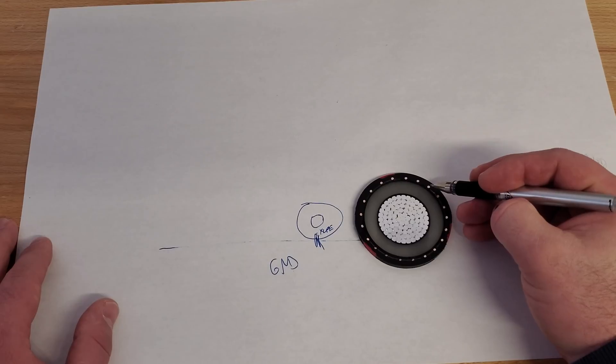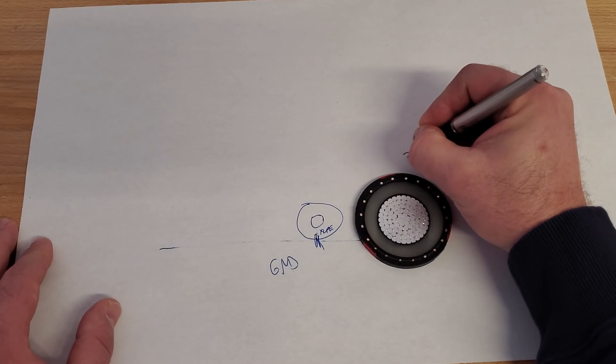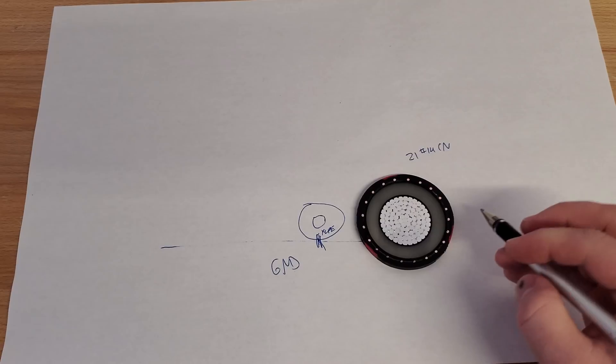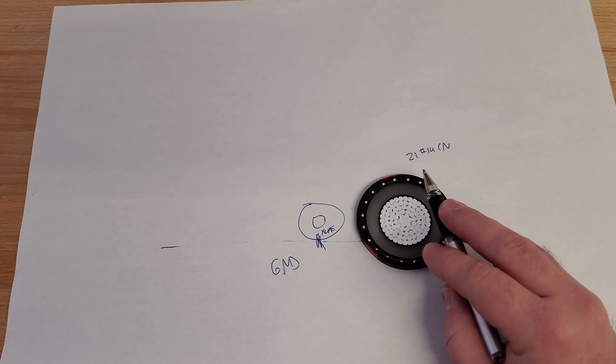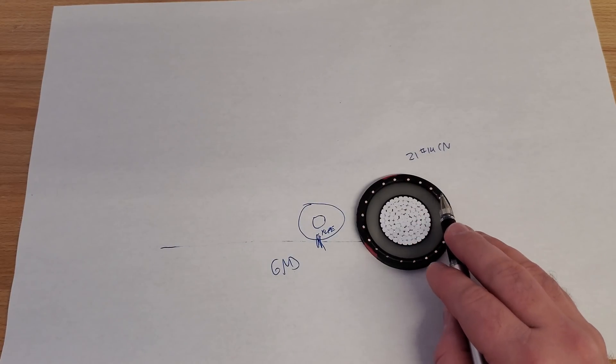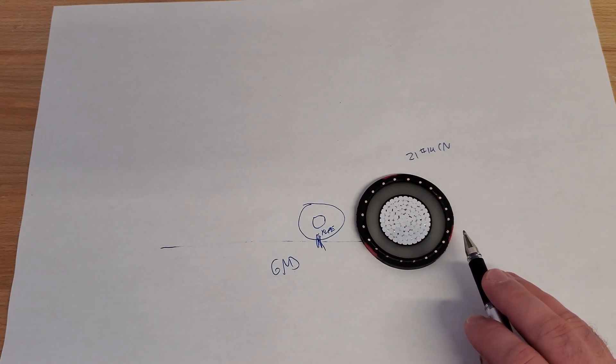So what these are, this is a 21, number 14, CN, concentric neutral. What 21, 14 means is easy. 21 of number 14 gauge copper conductors. That's it. What determines the size of this?